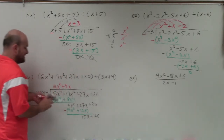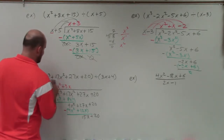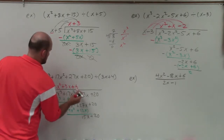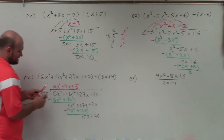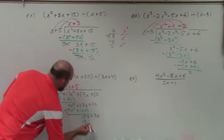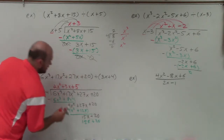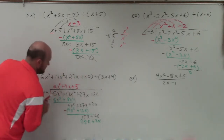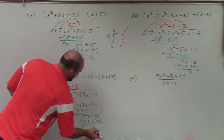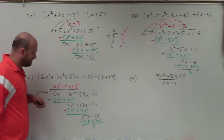3x divides into 15x positive 5 times. 5 times 3x is 15x, and 5 times 4 is 20. Subtract the rows and we get 0 as a remainder. So the quotient of this division problem is 2x squared plus 3x plus 5.